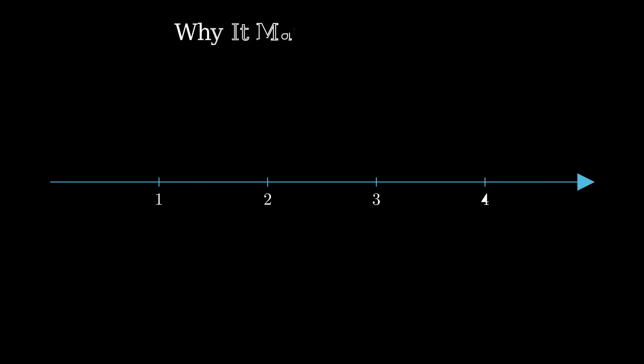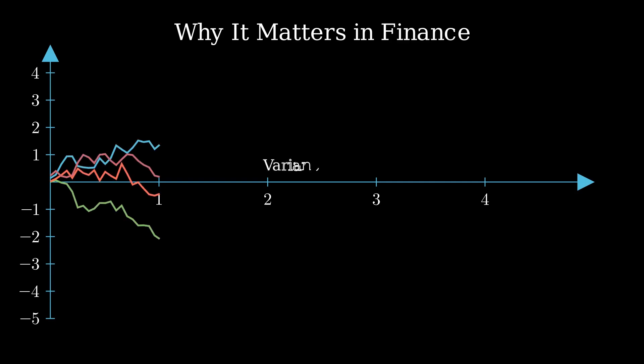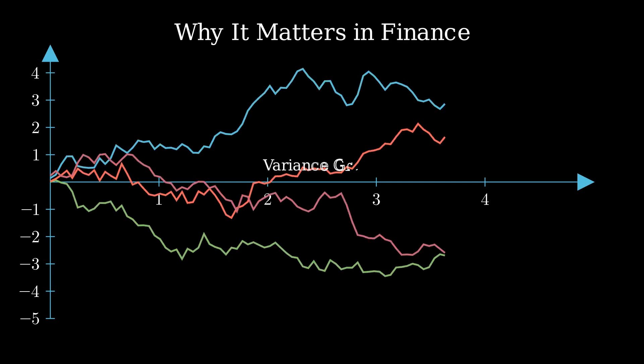Why care? Brownian motion fits stocks - random yet structured, like water gushing out of a garden hose. Paths spread out, variance grows with time, just like the fact that tomorrow is more uncertain than today. It's the backbone of finance models - chaos with rules.